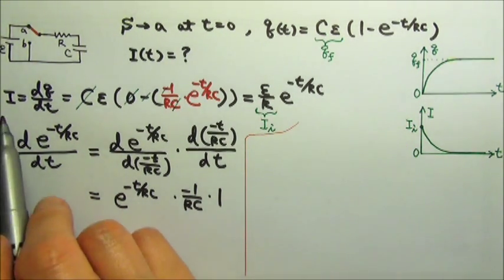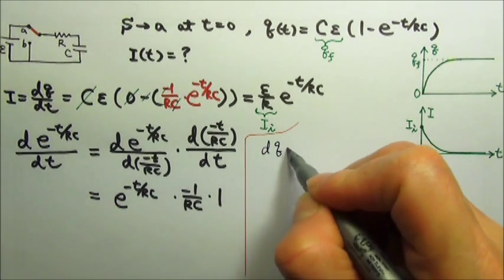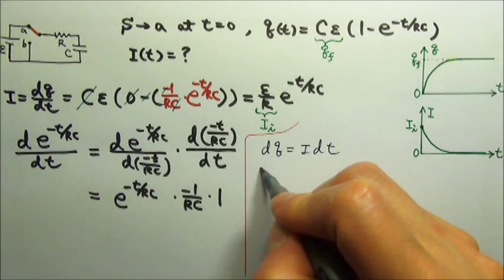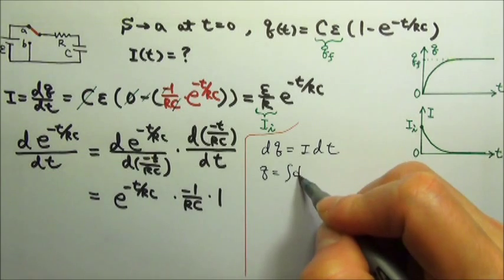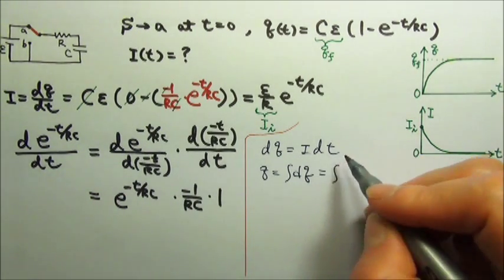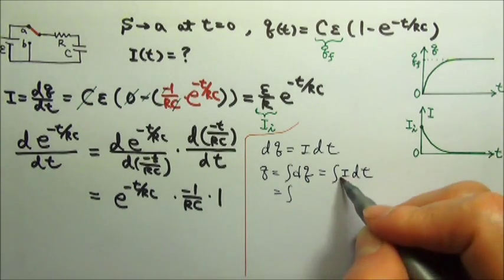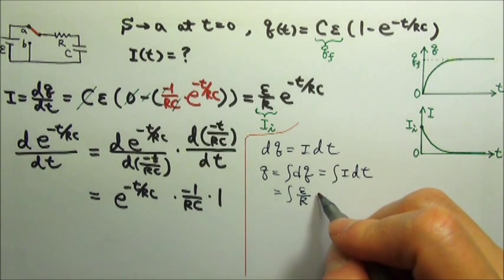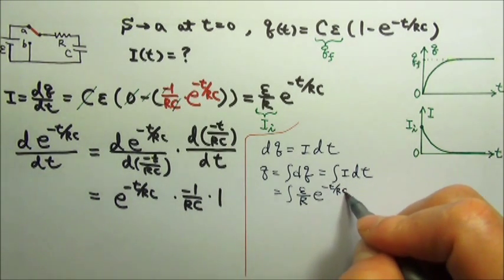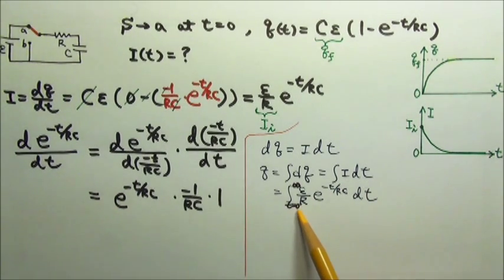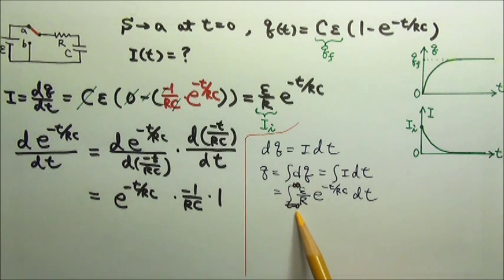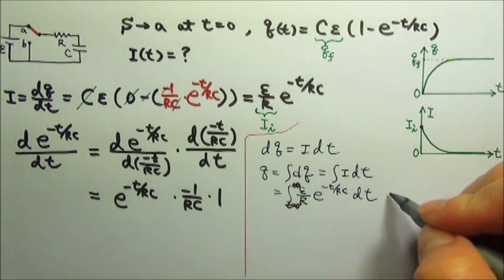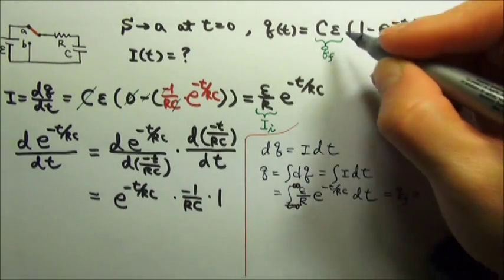Since i equals dQ/dt, that means dQ equals i dt, so Q equals the integral of dQ, which is the integral of i dt. We can plug in the current as a function of time, so this is the integral of E over R times the exponential decay dt. The charging process goes from t equals zero to infinity, so if we carry out this integral and apply the bounds, we get the total charge on the plates — which should be the final charge, C times E.